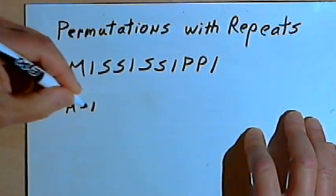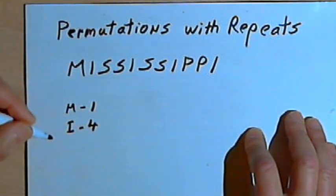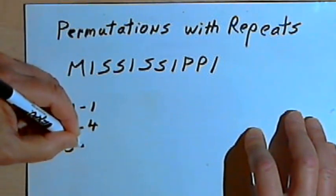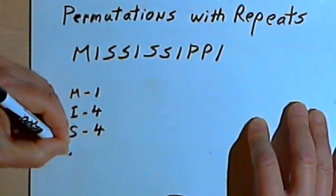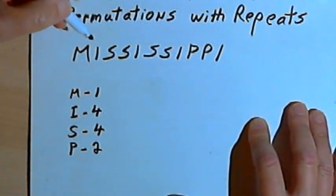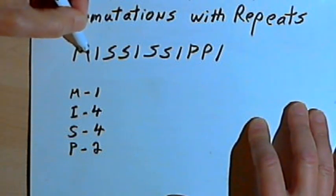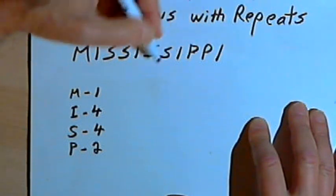So I've got one M, I've got four of the letter I, I've got four of the letter S, and I've got two of the letter P. And also count how many letters there are total. So Mississippi has 1, 2, 3, 4, 5, 6, 7, 8, 9, 10, 11 letters.